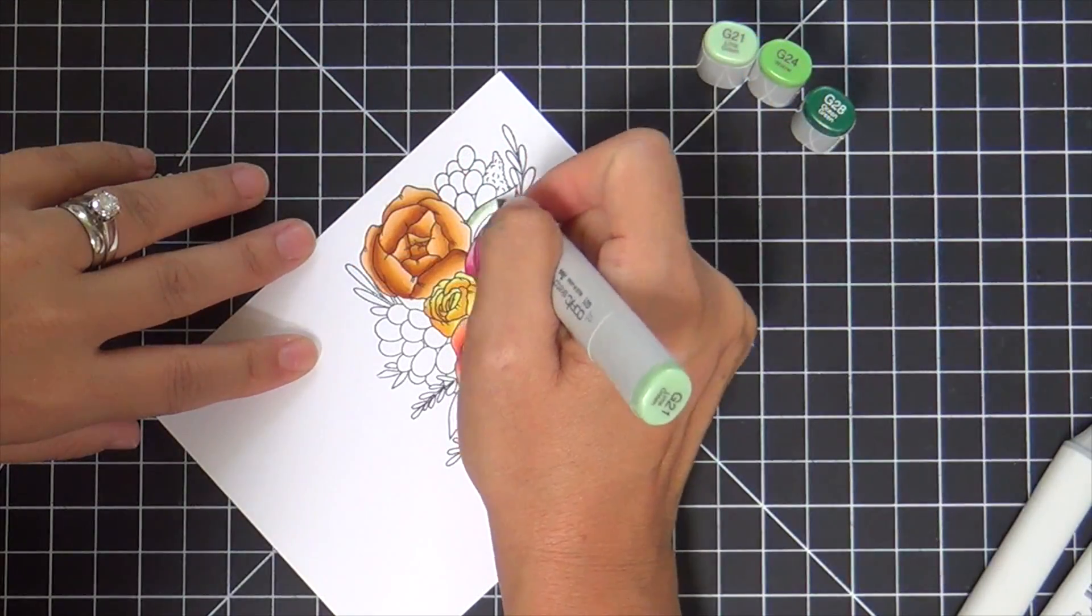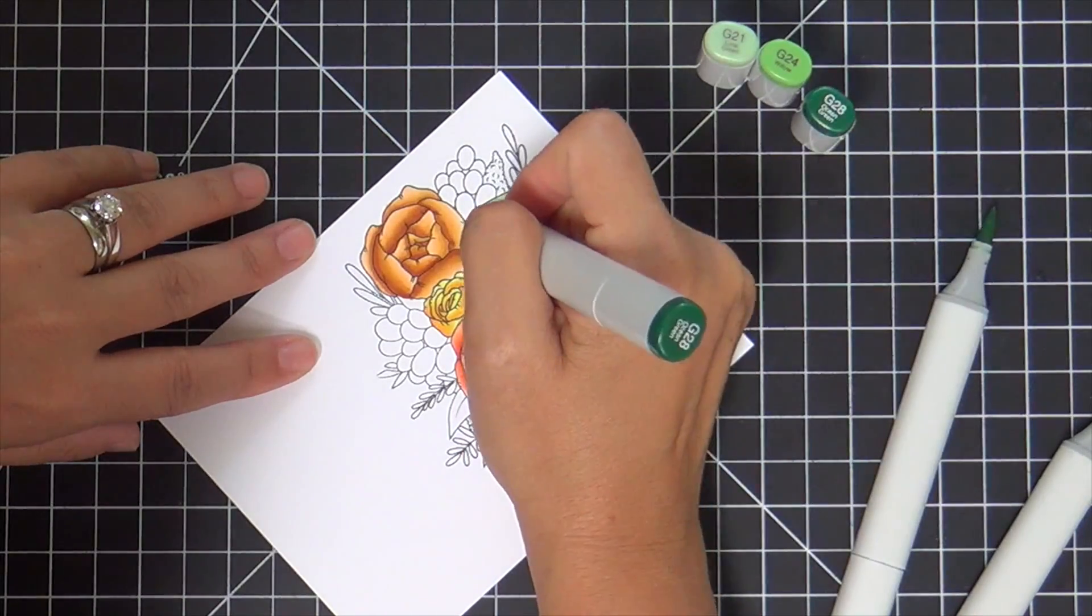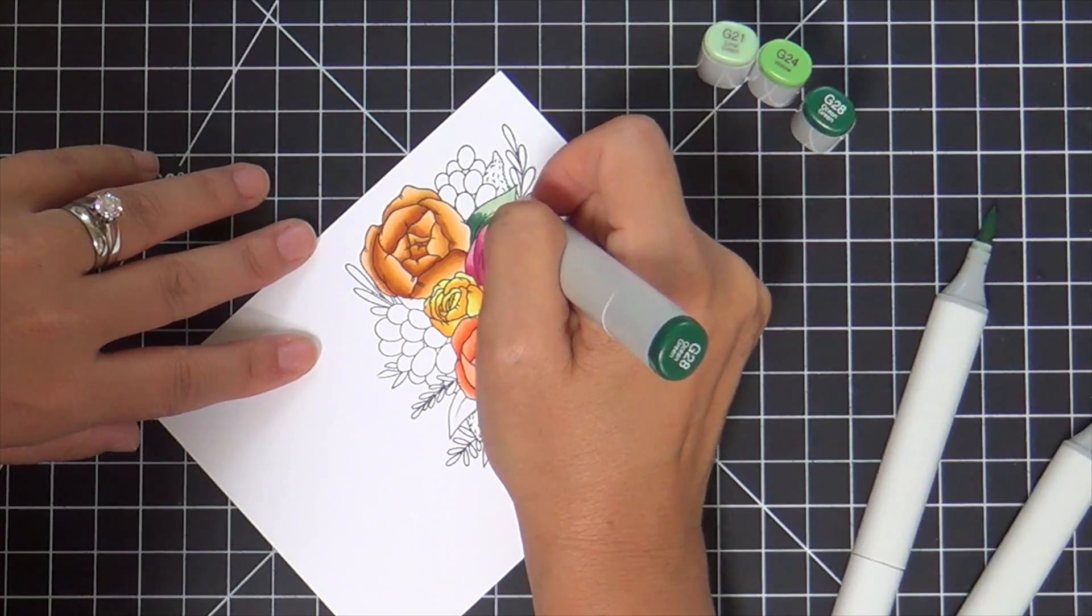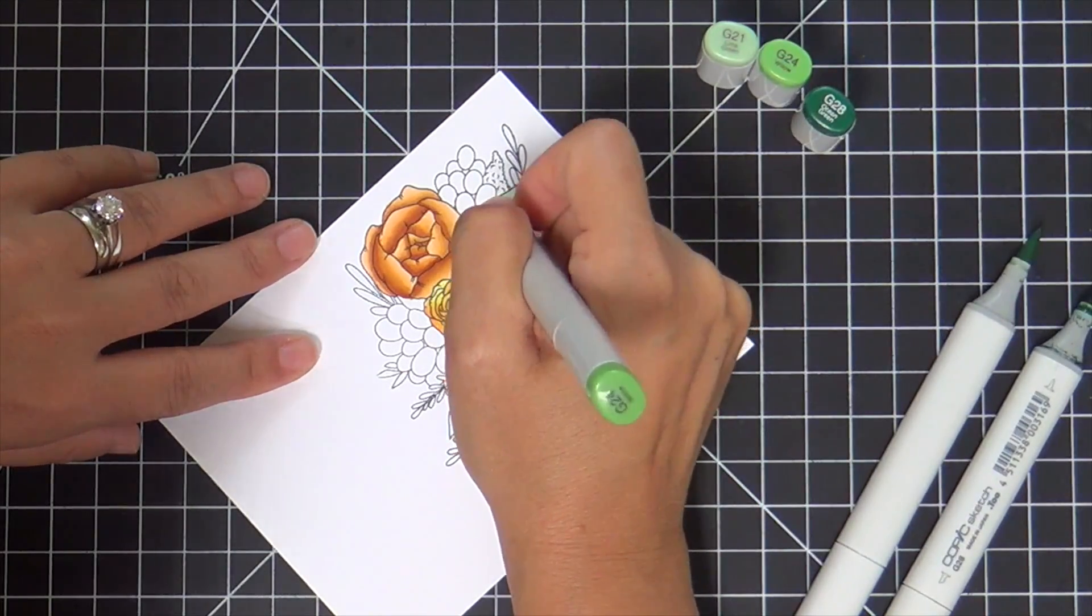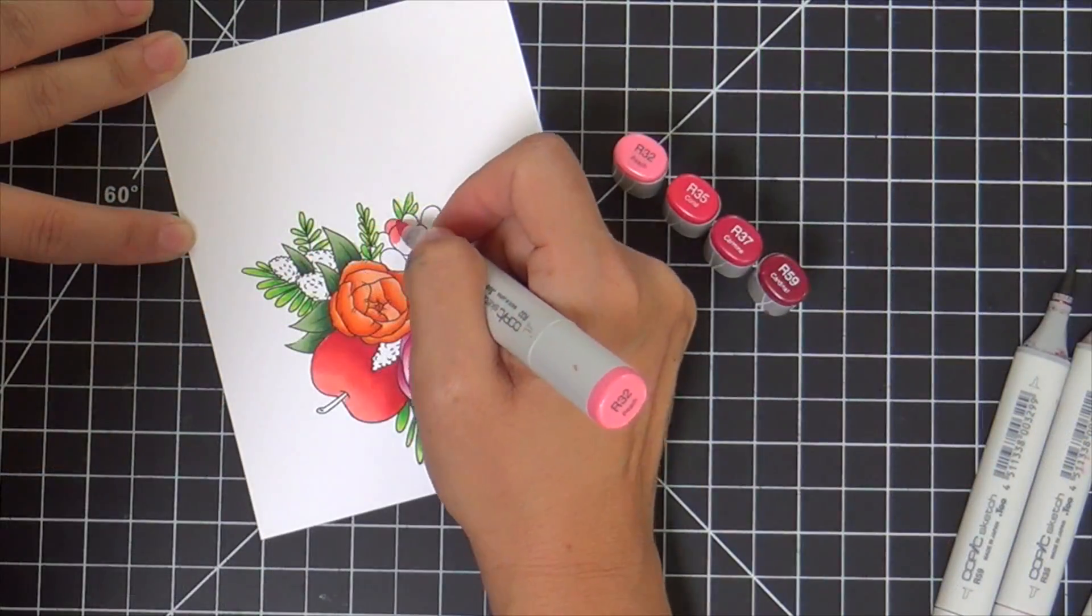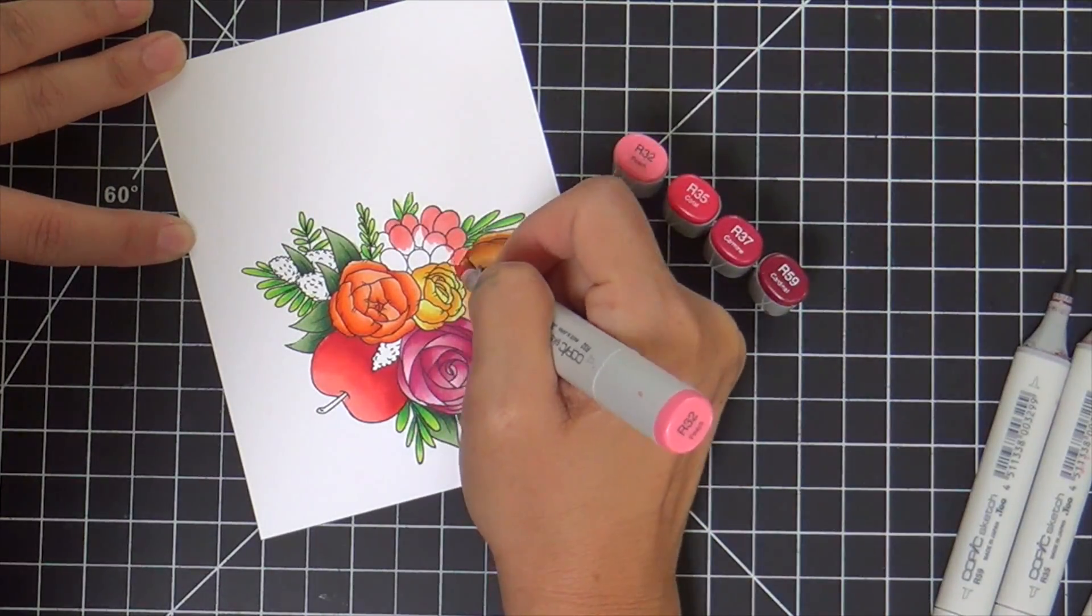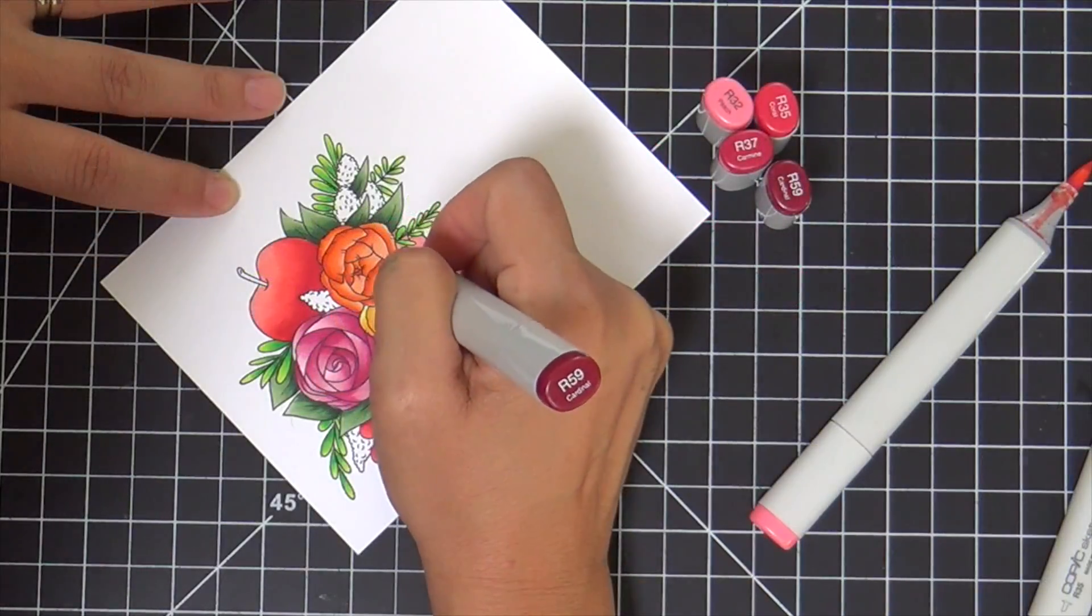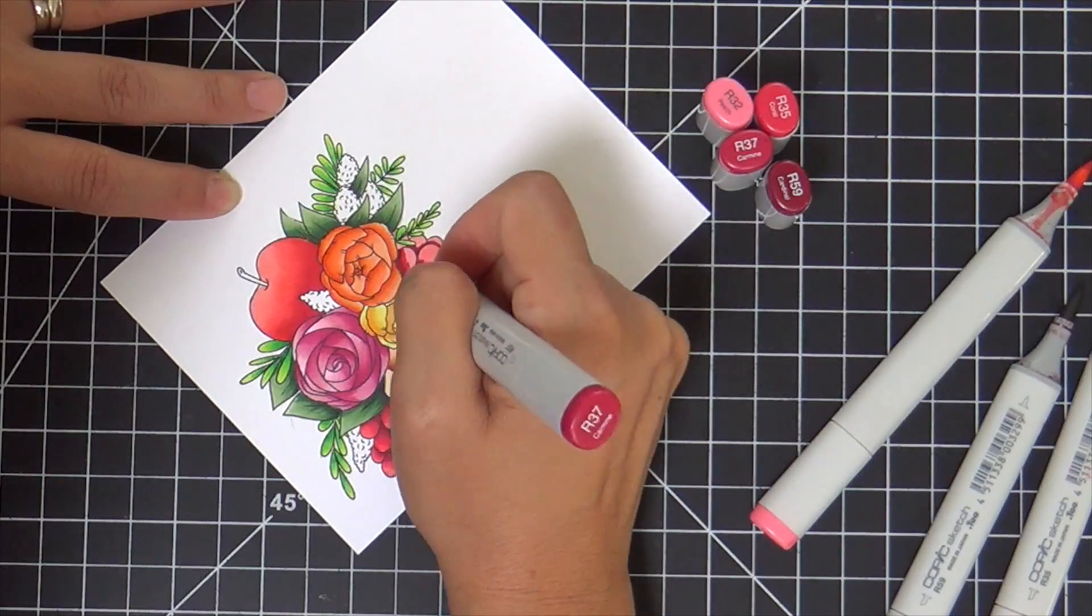You can see my marker caps there if you want to know exactly what colors I use. Generally I do two to three, sometimes four shades. I color the image first with the lightest color and then I go in with the darkest and work my way back up to the lightest, trying to get a seamless blend. These I assumed were berries, and I think those other things are pinecones.